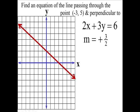Let's grab that point right there: negative 3. Go 1, 2, 3, and up to 5. This is the point negative 3, 5. Let me show you what I mean by perpendicular — we're going to go upward and to the right, up 3 and over 2. Up 1, 2, 3, and over 2. Then we'll draw the line; we're going to have another point right here. As we draw a straight line, it's got to go through both points. So it looks like we're going down 3 and over 2, and that's your perpendicular line — this is at right angles to the original line.